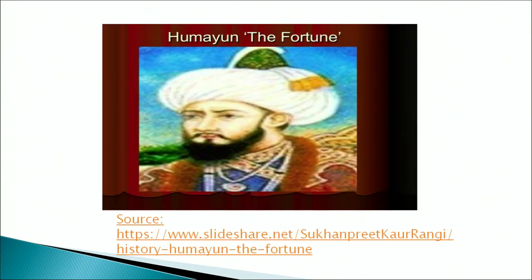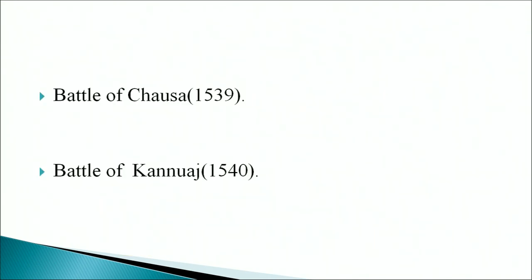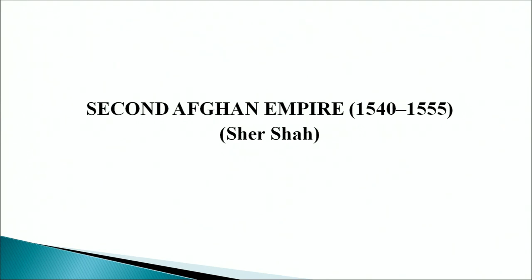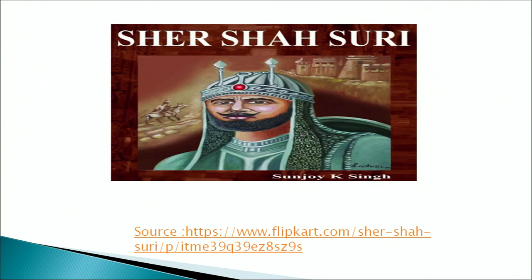Humayun had two important and decisive battles: the Battle of Chausa in 1539 and the Battle of Kanauj in 1540. These two battles resulted in victories that led to Humayun losing his Indian empire. The second Afghan Empire, from 1540 to 1555, followed. After a gap of 14 years, Sher Shah succeeded in establishing Afghan rule again in India in 1540. Sher Shah and his successors ruled for 15 years; this period is known as the period of the second Afghan Empire.